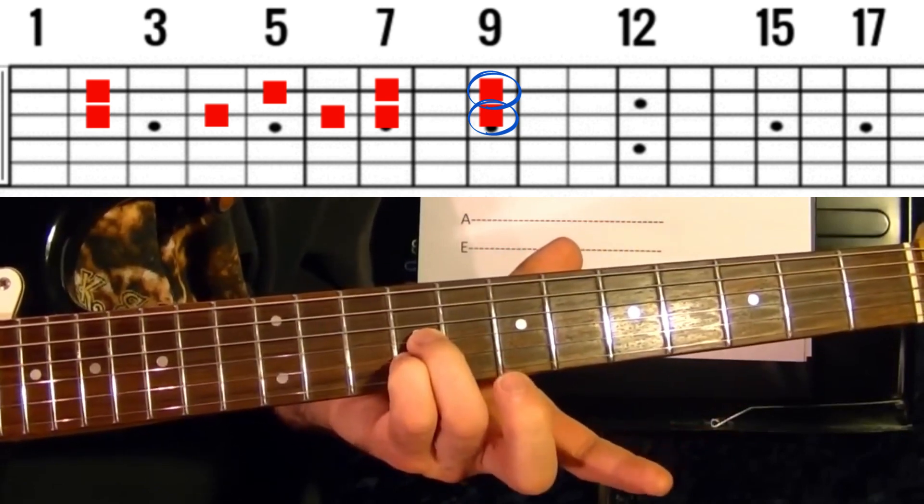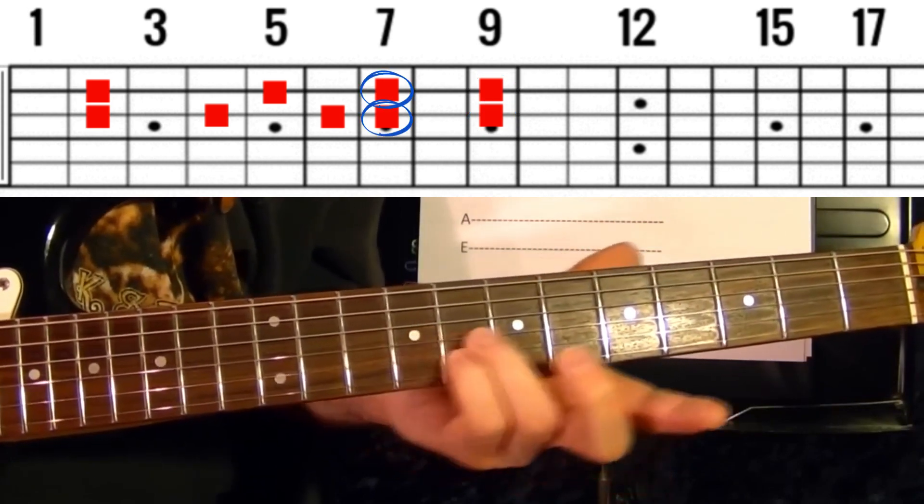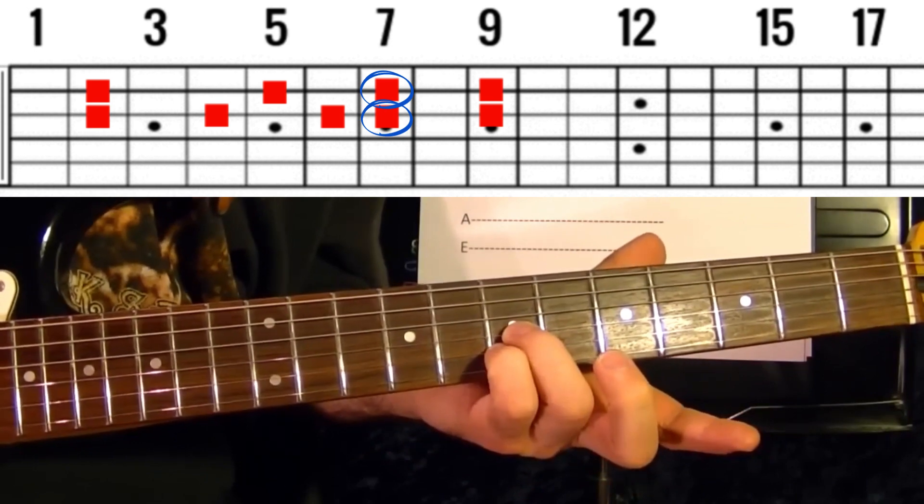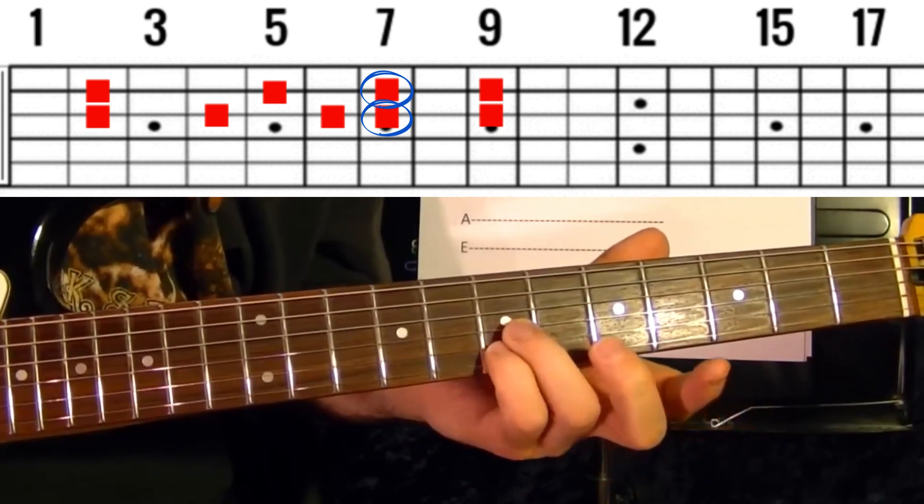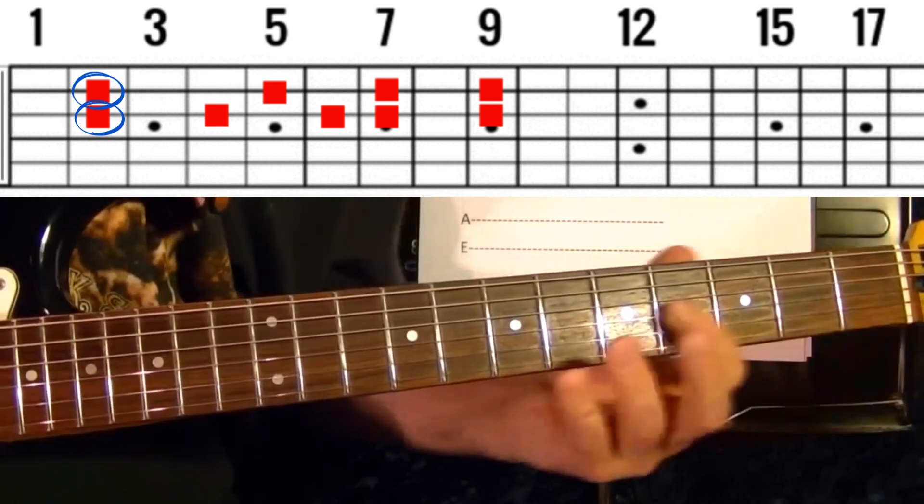Again, third string seventh fret, second and third strings slide down to the second fret.